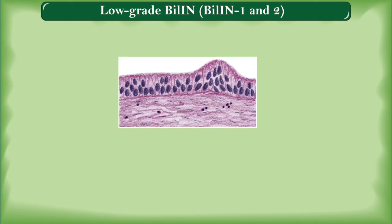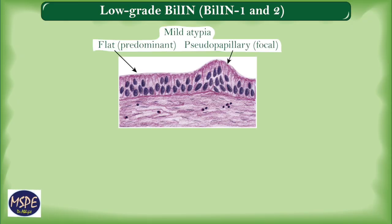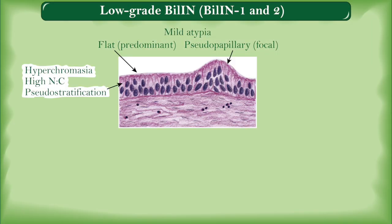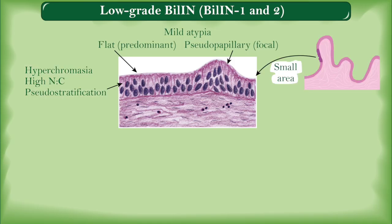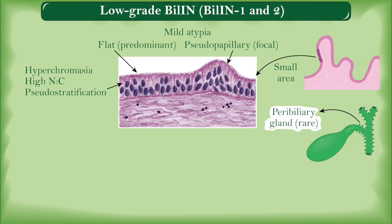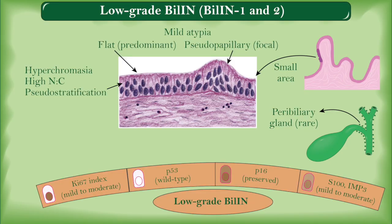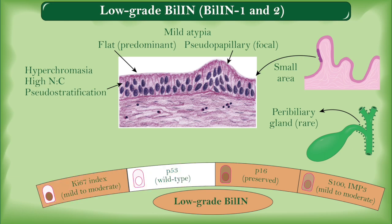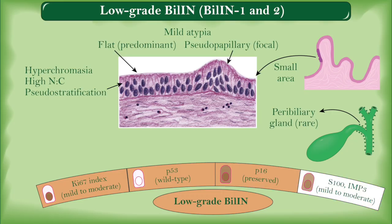Low-grade BilIN shows mild cytoarchitectural atypia, such as a mostly flat growth pattern with focal micropapillary or pseudopapillary patterns, hyperchromatic nuclei with high nuclear-to-cytoplasmic ratio and pseudostratification, preserved nuclear polarity, and involvement of relatively small foci. Peribiliary glands are rarely involved. In difficult cases, immunohistochemistry may aid in diagnosis. Ki-67 proliferation index is mild to moderately increased. P53 is usually negative or wild-type. P16 immunostain is relatively preserved. S100 and IMP3 stains are mild to moderately increased.